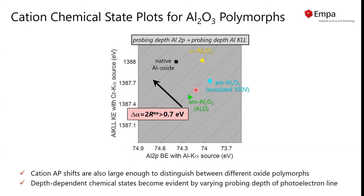We see also that we can distinguish different local environments of aluminum in these oxide films grown by different synthesis methods. The shift in the Auger parameter is larger than 0.7 eV, and this shows that we can very nicely probe the local chemical state of the cations and not only the anions when using the Qantas system.